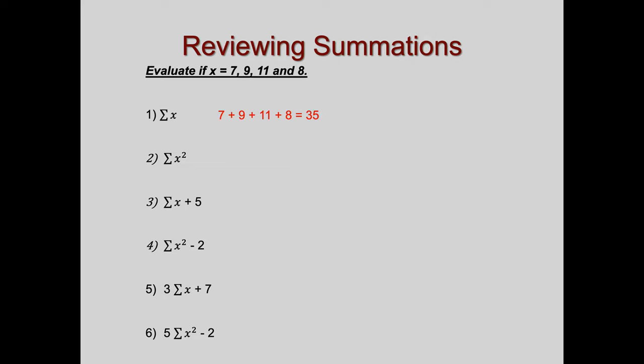Okay. So number one just says find the sum of the x's. That's what summation means. Greek letter sigma, short for summation, the s at the beginning. So you're going to add up all the x's. Sum means to add. So seven, nine, eleven, and eight. You add them up, and you get 35. Now it says find the sum of the x squareds, and we have to follow a statistical order of operations, which means we need to square these things first. And seven square is 49. Nine square is 81. Eleven square is 121. Eight square is 64. I add them all up, and I get 315.